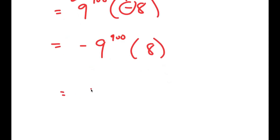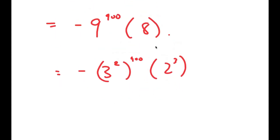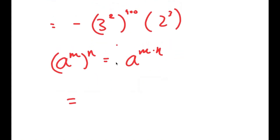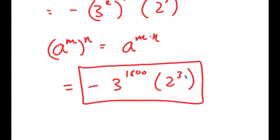Rewriting 9 as 3 squared and 8 as 2 to the power of 3, I have negative 3 squared to the power of 900 times 2 to the power of 3. Using the power rule, 3 squared to the power of 900 equals 3 to the power of 1800. So the final answer is negative 3 to the power of 1800 times 2 to the power of 3.